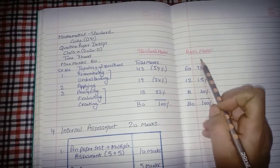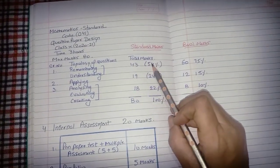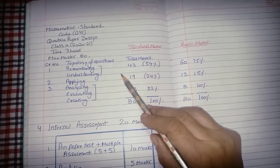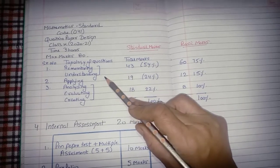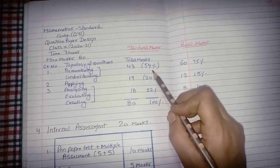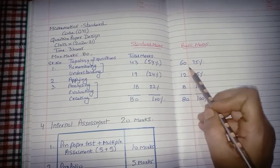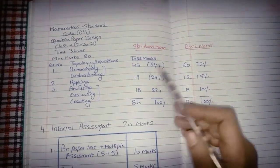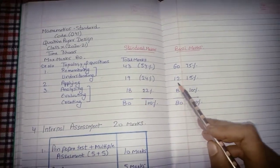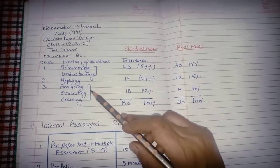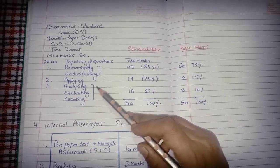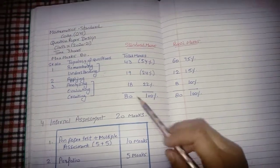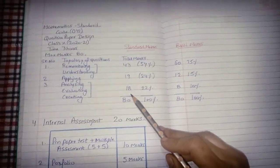Now let's talk about how the paper will be structured - Standard vs Basic. For the Standard paper: 43 marks (54%) will be understanding-based questions. For the Basic paper: 60% will be understanding-based. For applying and analysis (direct formula application): Standard has 19 marks and Basic has 12 marks. For analyzing, evaluating, and creating (where you analyze an answer, evaluate, and derive something new): Standard has 18 marks and Basic has 8 marks.